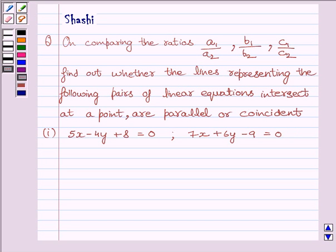Hi and welcome to the session. My name is Shashi and I am going to help you with the following question. The question is on comparing the ratios A1 upon A2, B1 upon B2, and C1 upon C2, and finding out whether the lines representing the following pairs of linear equations intersect at a point, are parallel, or coincident.